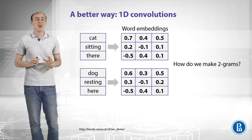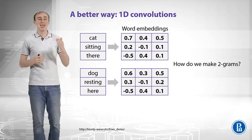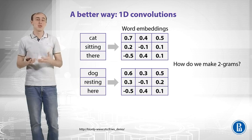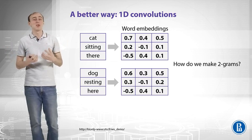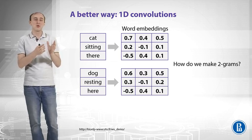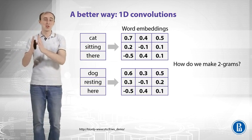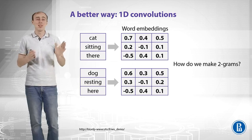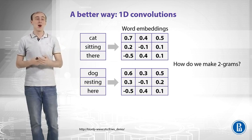Another approach is applying neural networks over these embeddings. Consider sentences like 'cat sitting there' or 'dog resting here' — for each word we take a row representing a word2vec embedding of length 300. Now, how do we make use of bigrams? In bag of words you had a different column for each bigram, giving a very long sparse vector. But here we only have word2vec embeddings for individual words, not token pairs.